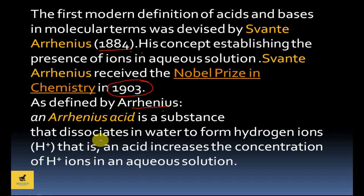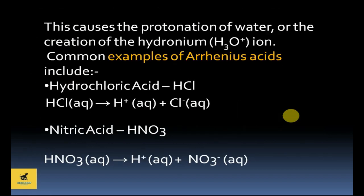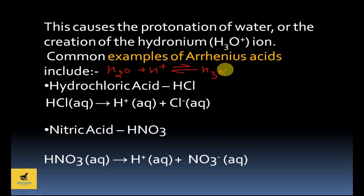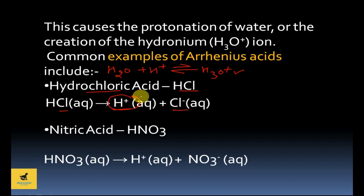According to Arrhenius, an Arrhenius acid is a substance which dissociates in water to form hydrogen ions (H⁺). Simply, any substance that releases H⁺ ions in water is called an Arrhenius acid. This causes the protonation of water or the creation of hydronium ions. For example, HCl dissociates in water to give H⁺ and Cl⁻. Similarly, nitric acid is also an Arrhenius acid.